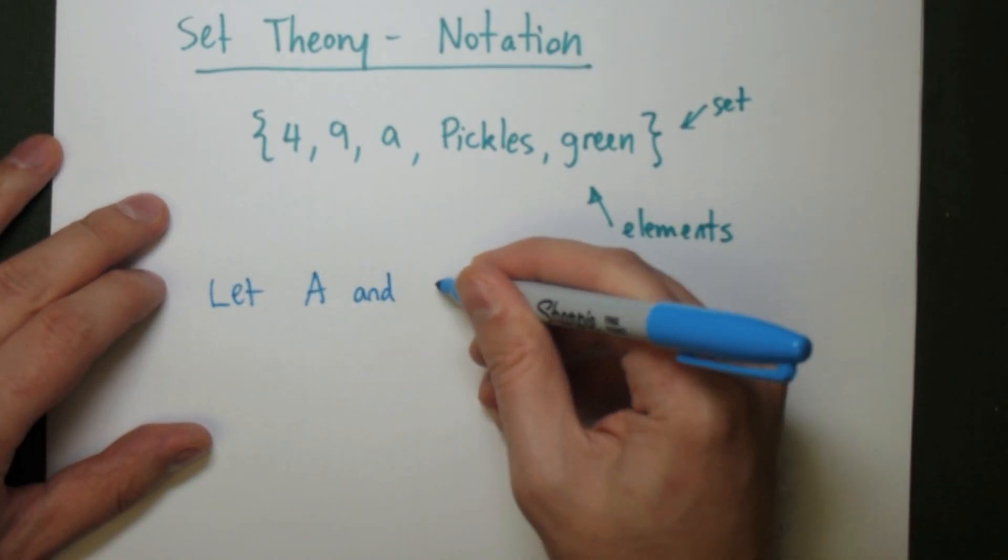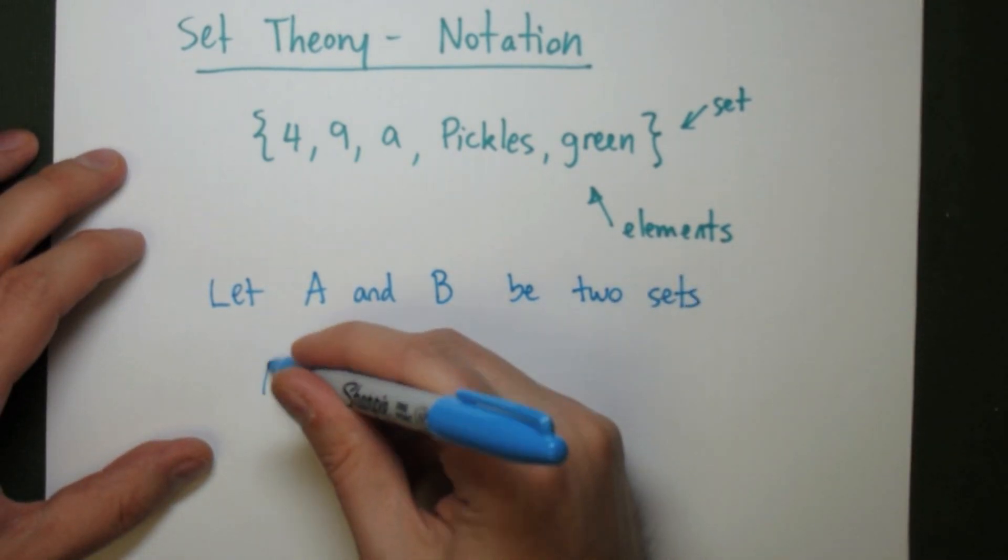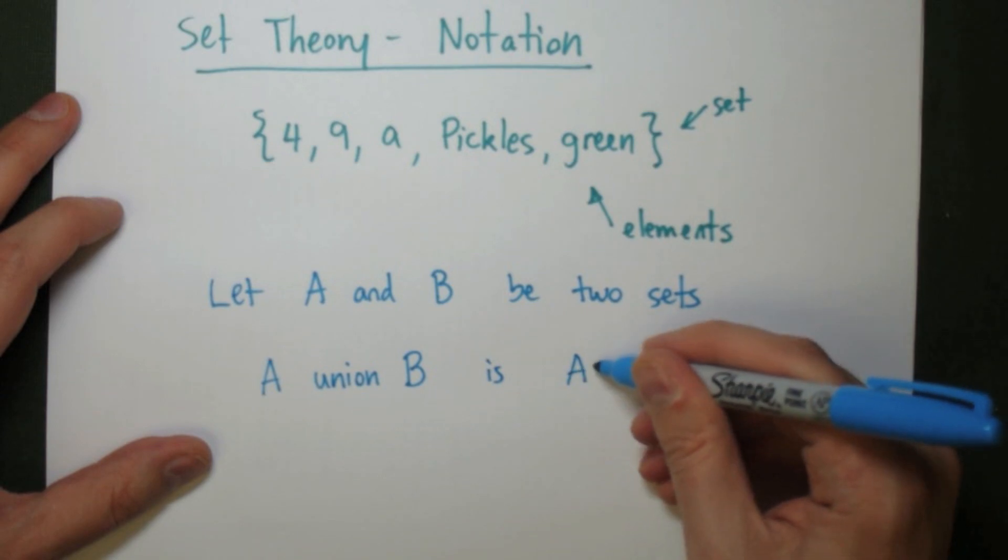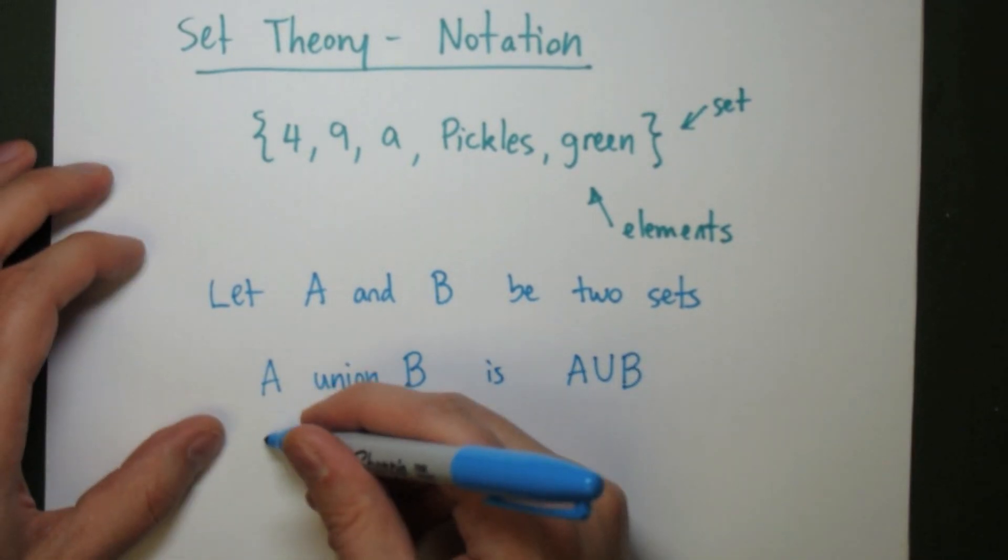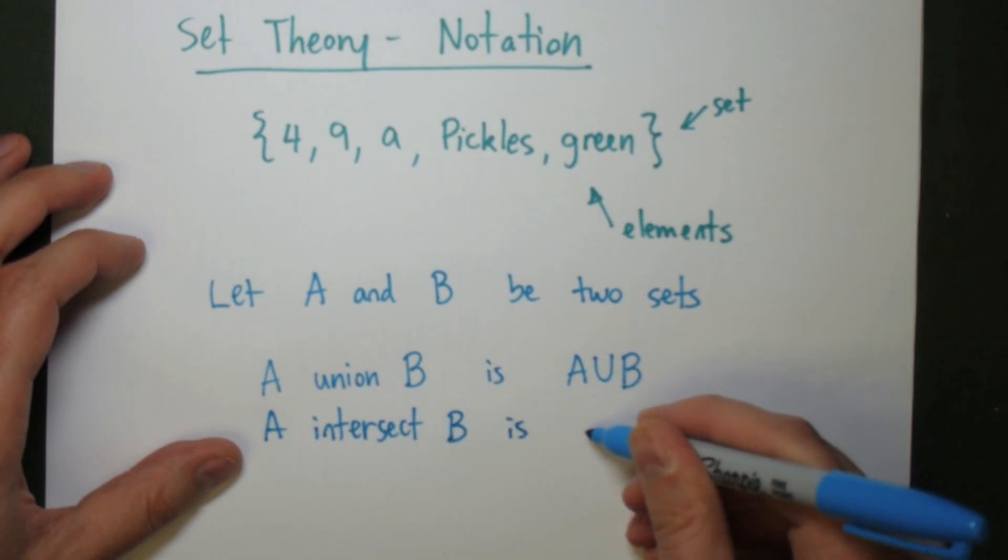If we have two sets, if we let A and B both be sets, then we can talk about the union and the intersection. The union is given by this symbol here, and the intersection is given by a similar symbol, but it's facing down instead of up.